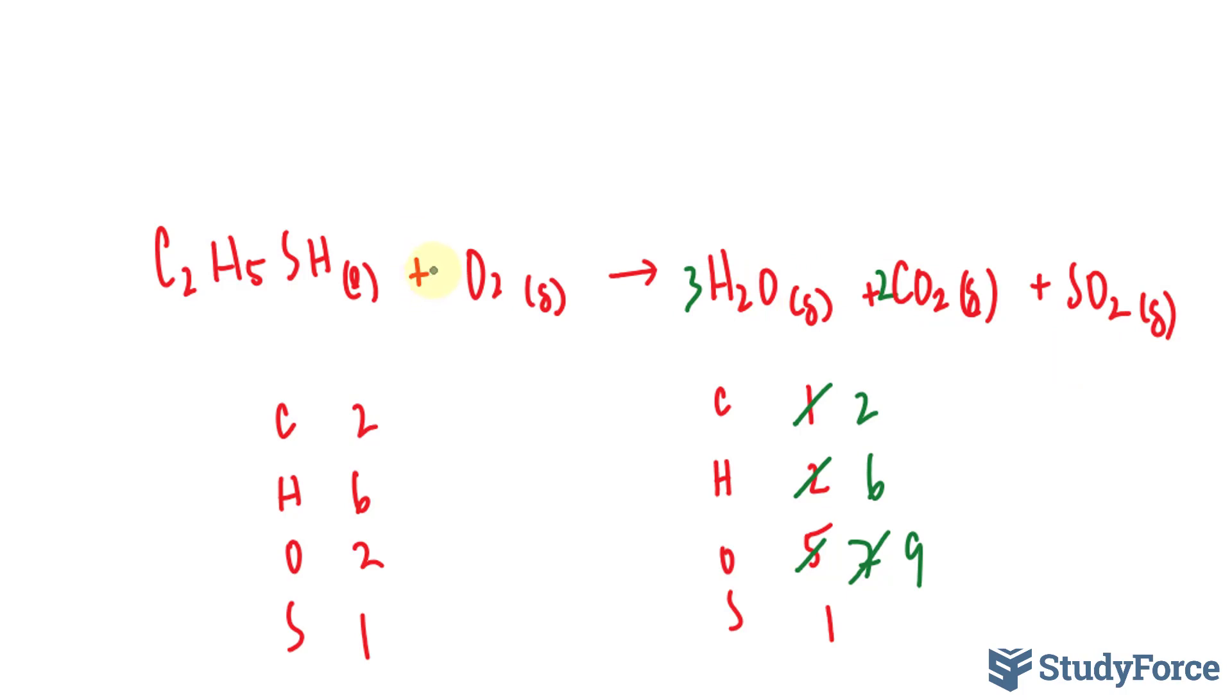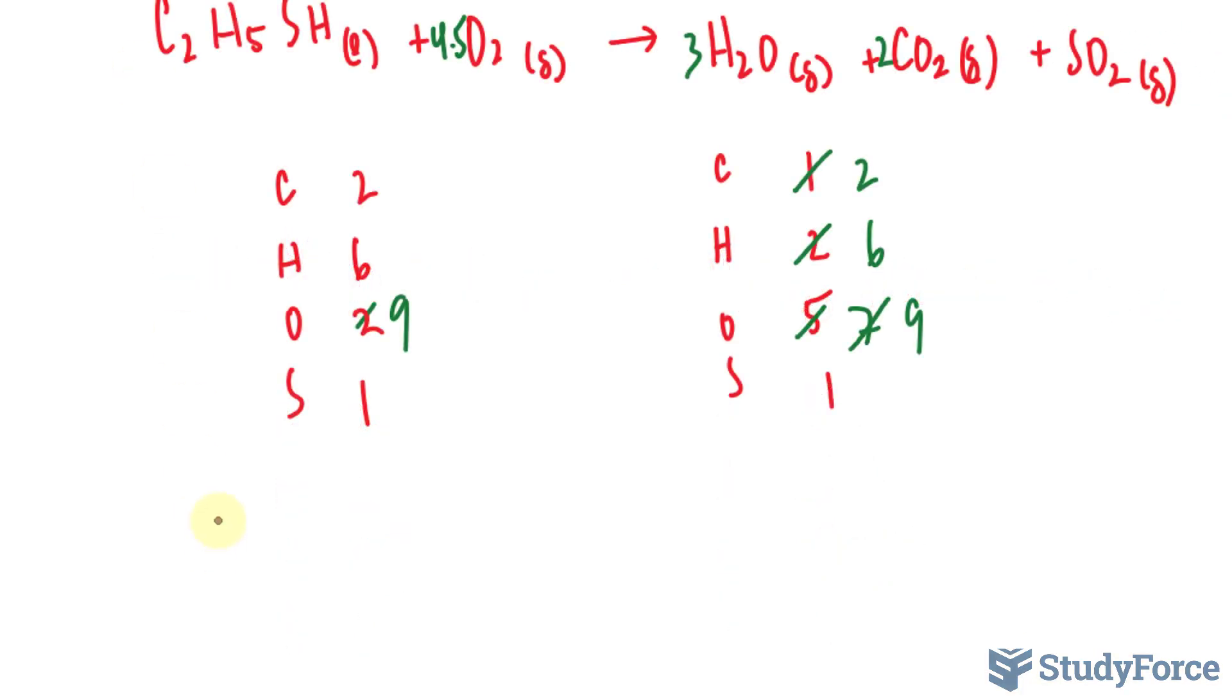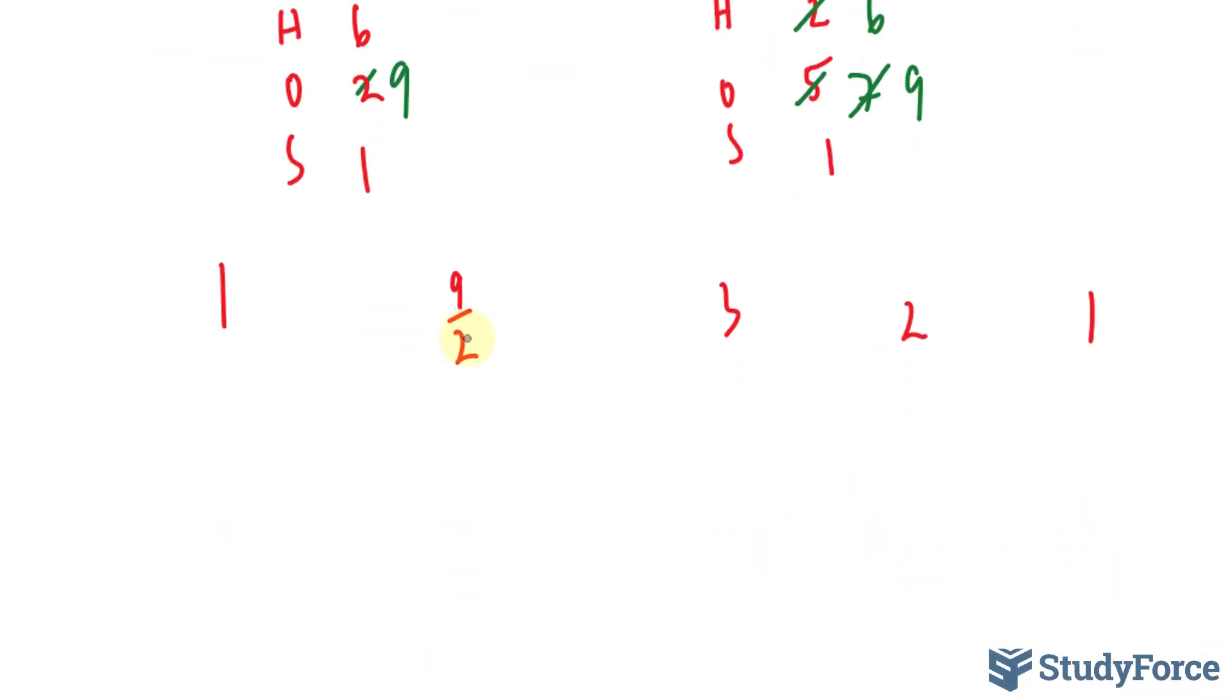And if I place a 4.5 right here, I'll end up with 4.5 times 2 is 9. Now I know you don't like fractions, but it's fine, because all you do at this stage is write down all the coefficients. So this coefficient was 1, this coefficient is 4.5, which is the same thing as 9 over 2. This is 3, 2, and 1.